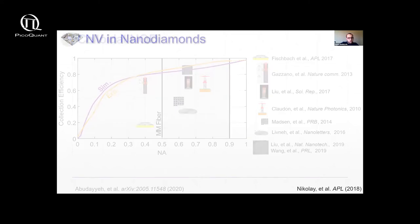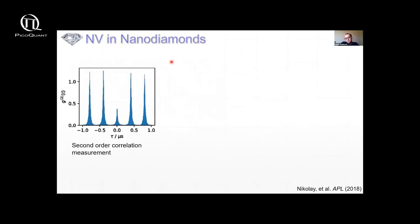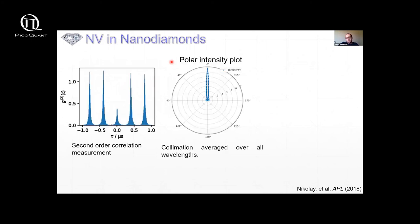Just as a side note, we also managed to do this using nanodiamonds. So we have nanodiamonds with single NVs and we placed them in the center of the bullseye again. Showed again that they're single NV centers and very high directionality also using the same similar techniques.